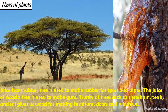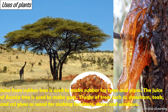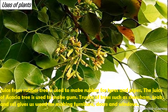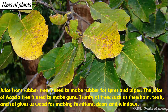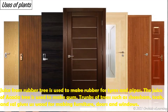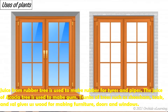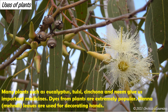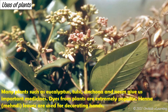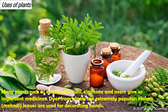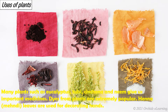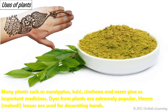The juice of the acacia tree is used to make gum. Trunks of trees such as Shisham, teak, and sal give us wood for making furniture, doors, and windows. Many plants such as eucalyptus, tulsi, cinchona, and neem give us important medicines. Dyes from plants are extremely popular — henna and mehndi leaves are used for decorating hands.